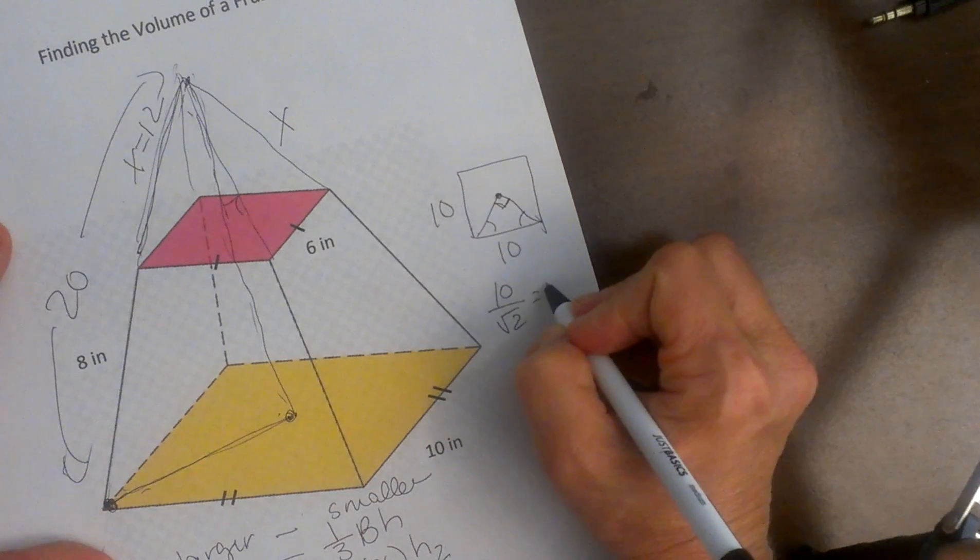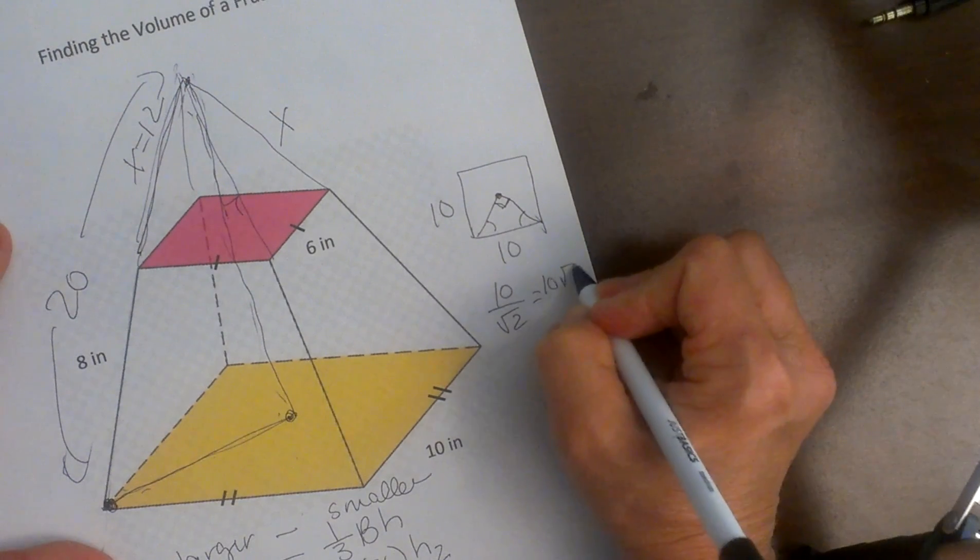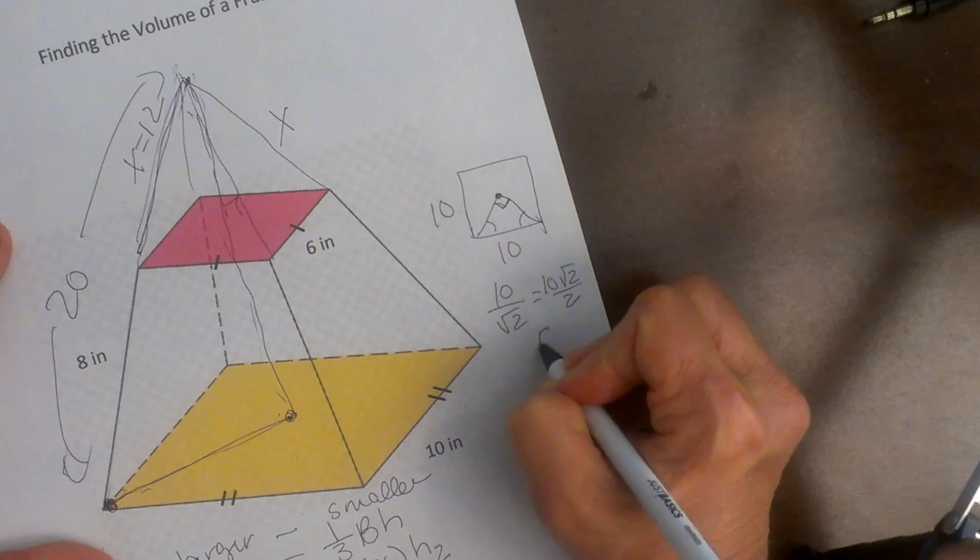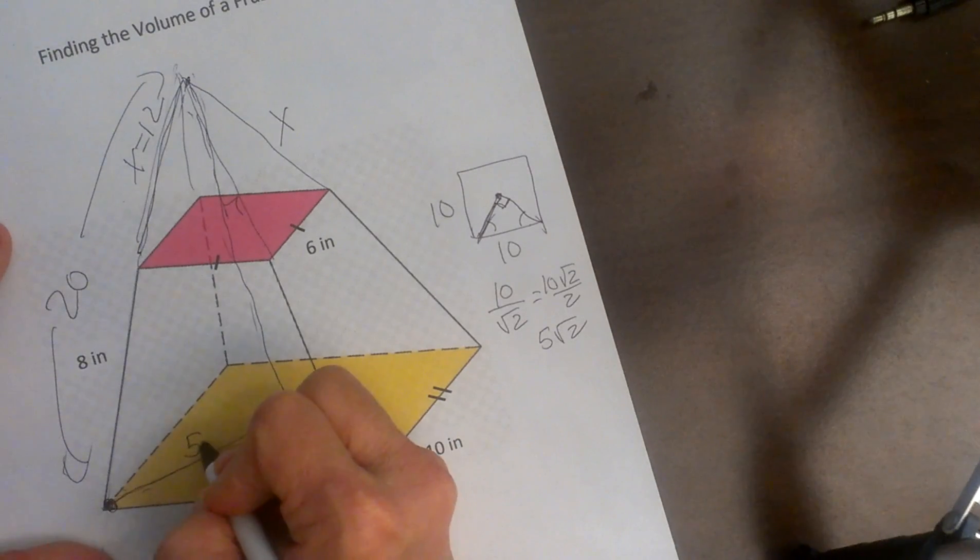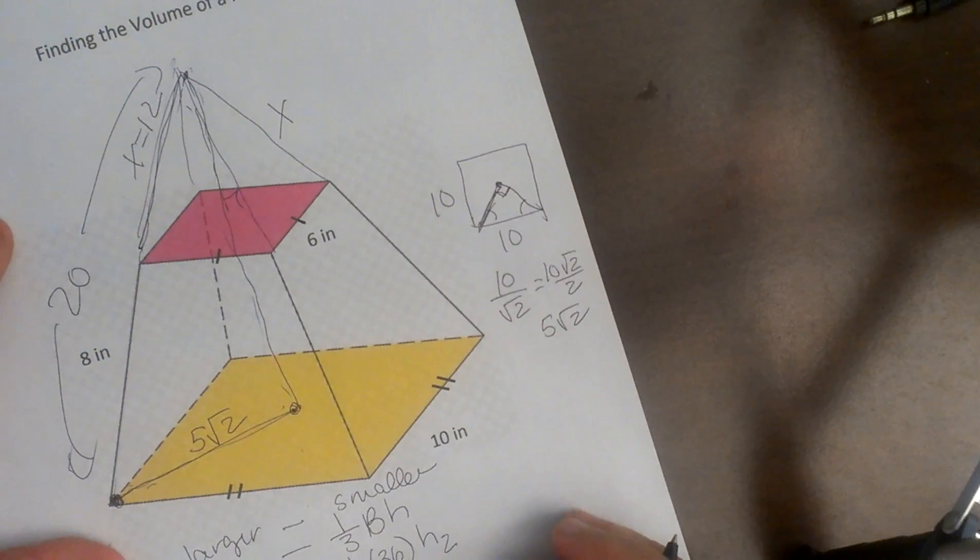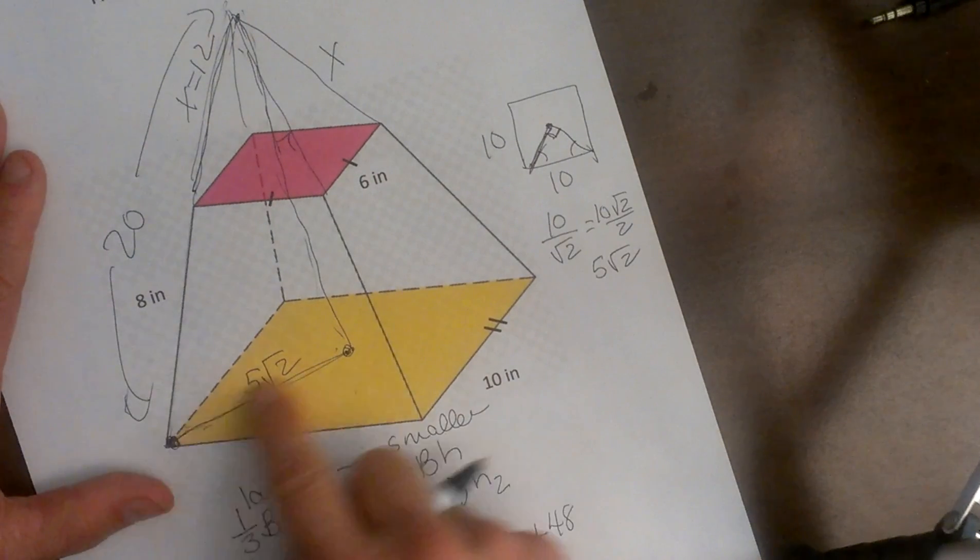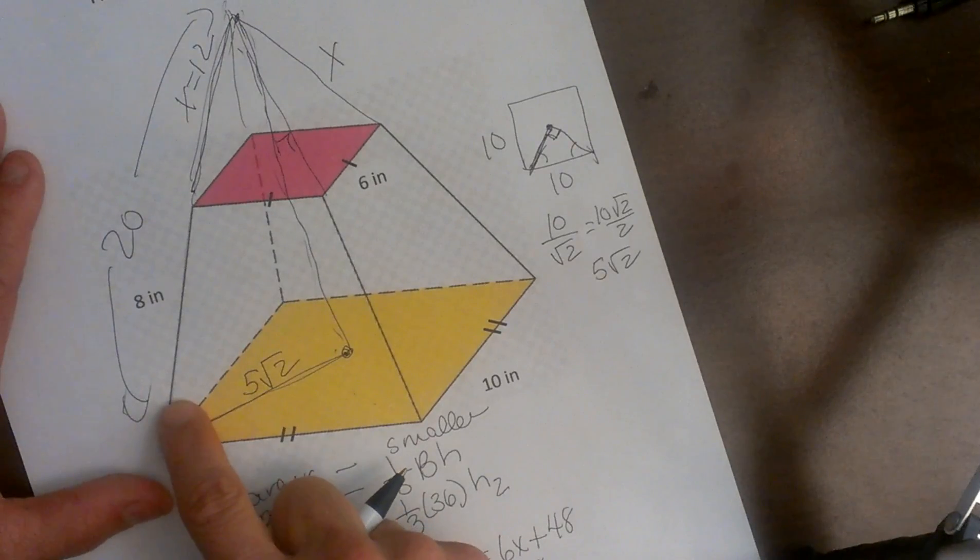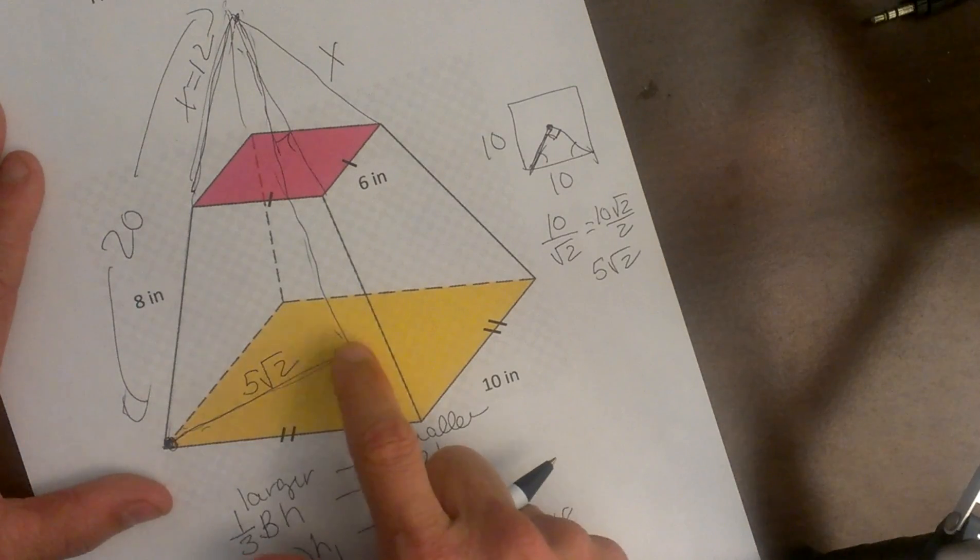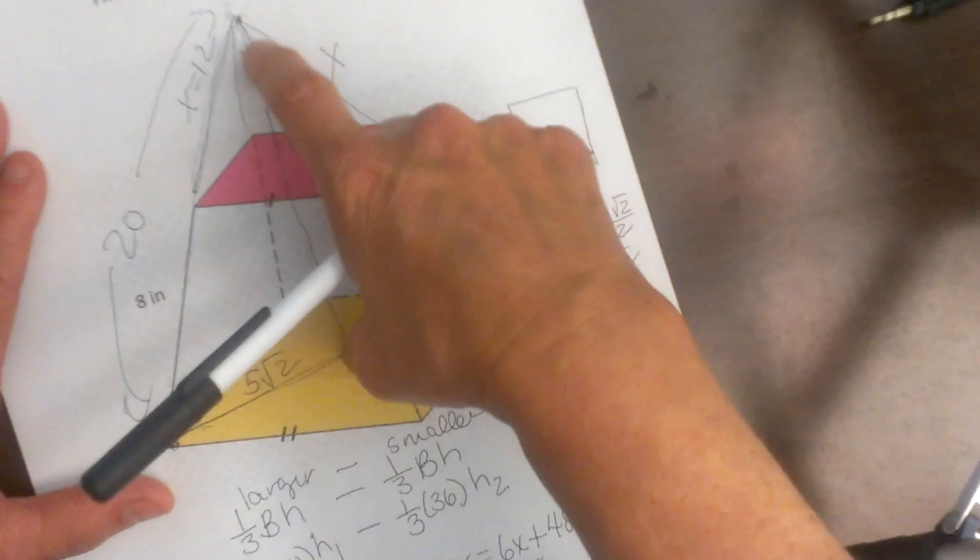This is a 45 degree angle. This is a 90 degree angle. So all I have to do is divide 10 by the square root of 2 and that gives me 10 root 2 over 2 or just 5 root 2. So that is this dimension. So this dimension is 5 square root 2. Okay now I can use my Pythagorean theorem knowing that this dimension is 20. This dimension is 5 root 2 and I can solve for my big height.